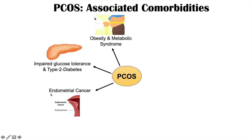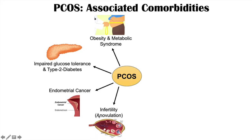Another comorbidity is endometrial cancer. Because PCOS patients are often anovulatory with no regular menstrual cycles or complete amenorrhea, they have unopposed estrogen, meaning the endometrial lining continues to grow. This can lead to endometrial hyperplasia and ultimately endometrial cancer if there is long-standing unopposed estrogen. It's important to get these patients on progestin-containing oral contraceptives to oppose the estrogen. Another comorbidity is infertility — since they are not ovulating or releasing an egg, they are unable to get pregnant.